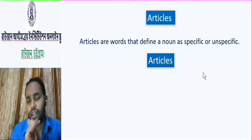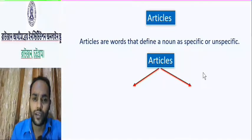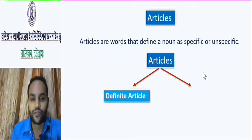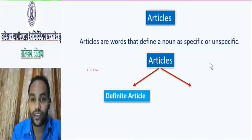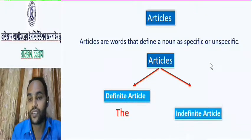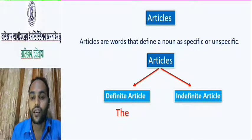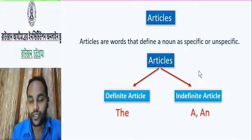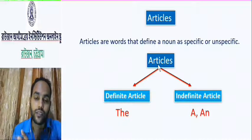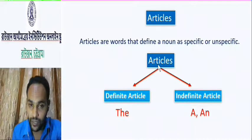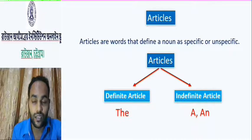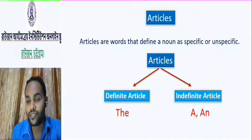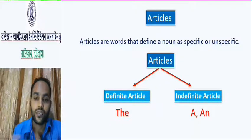There are two kinds of articles. First one: definite articles — 'the' — and indefinite articles — 'a' and 'an'. I think you got articles. There are two kinds of articles: definite and indefinite. Definite article is 'the' and indefinite articles are 'a' and 'an'.